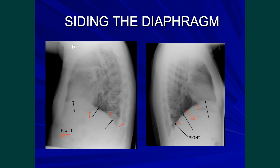Here is another example. The left hemidiaphragm is seen from back to front and stops as it reaches the cardiac silhouette. The right hemidiaphragm is seen from back to front and is uninterrupted even as it goes across the cardiac silhouette.